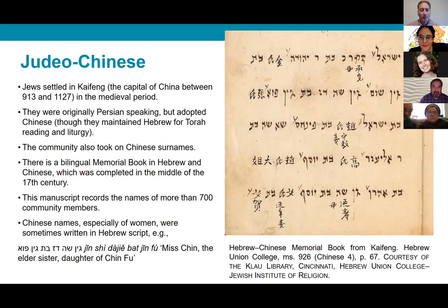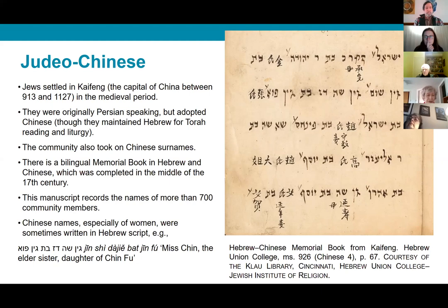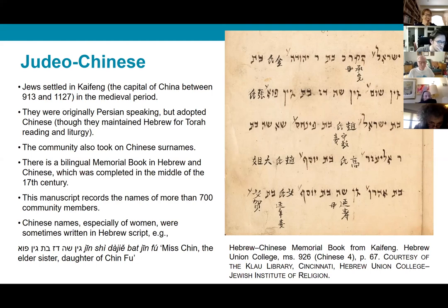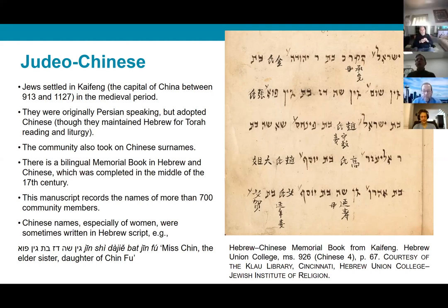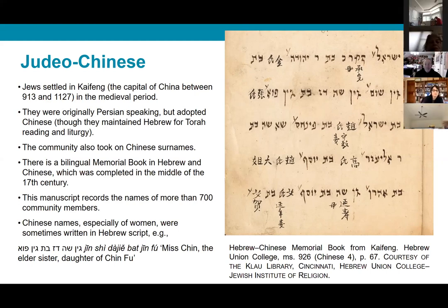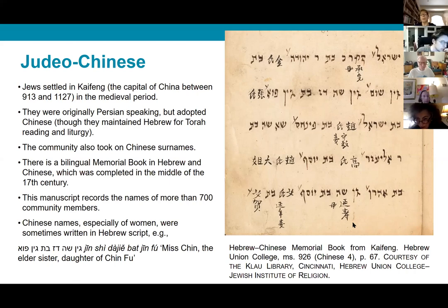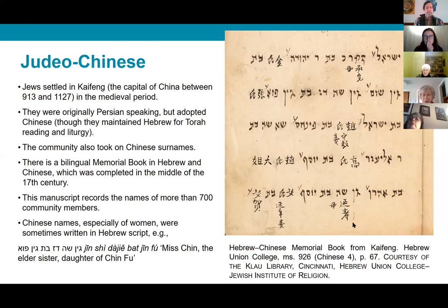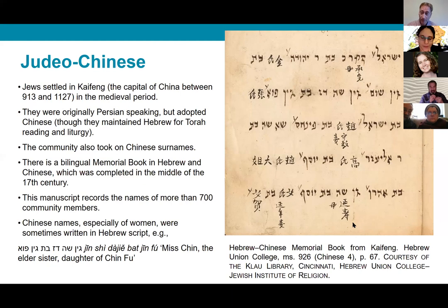One of the really exciting aspects of working on Jewish languages is seeing how diverse Jewish life has been globally. As many people know, Jews settled in Kaifeng, the capital of China in the medieval period. They probably came from a Judeo-Persian speaking area. At some point they adopted Chinese, although they maintained Hebrew for reading the Torah and liturgy. They were very well accepted and welcomed into Kaifeng society — they acculturated, took on Chinese surnames, and over the centuries became very well embedded in Chinese culture.